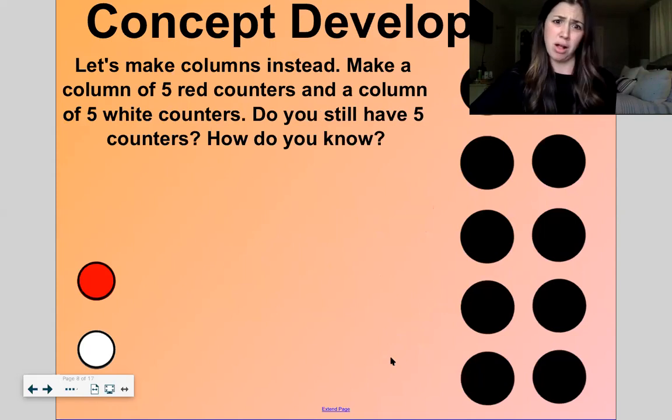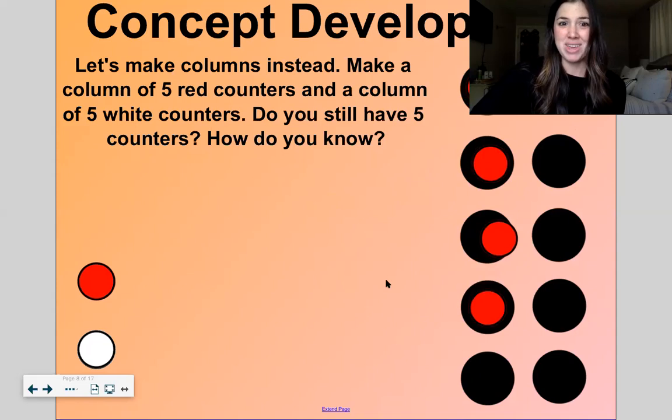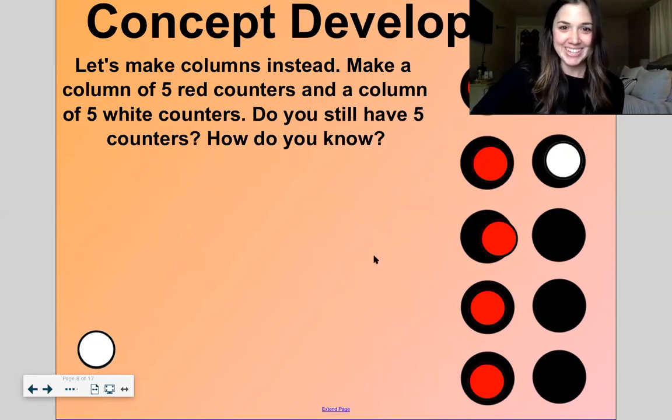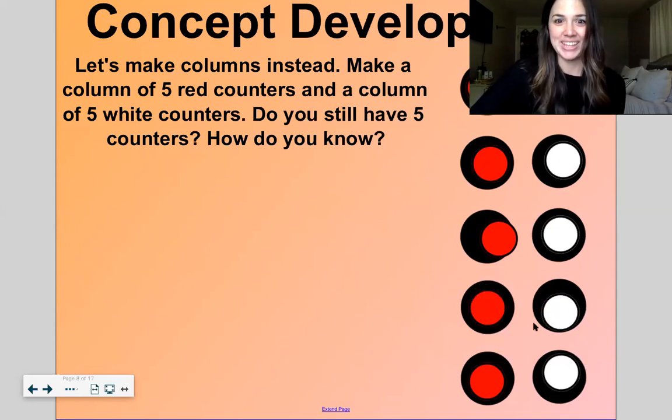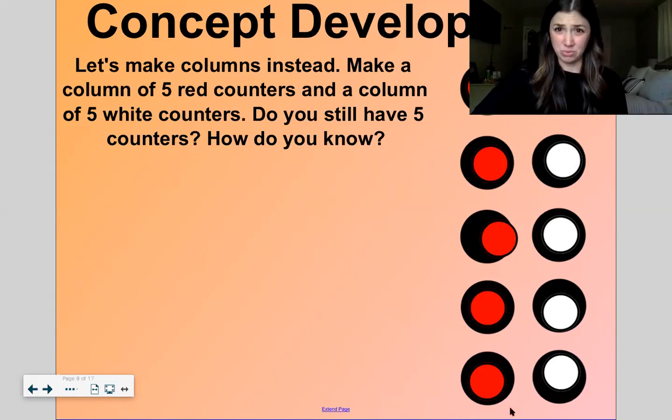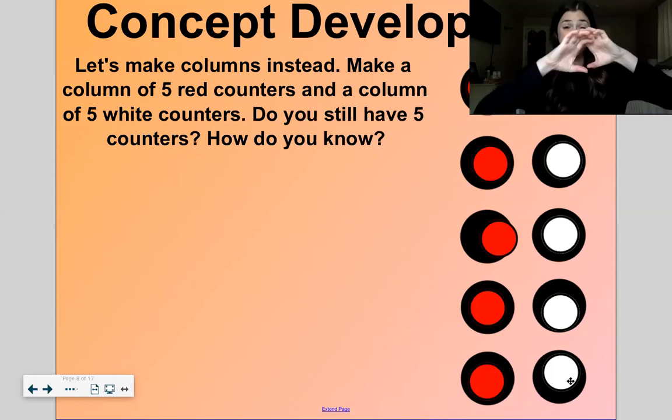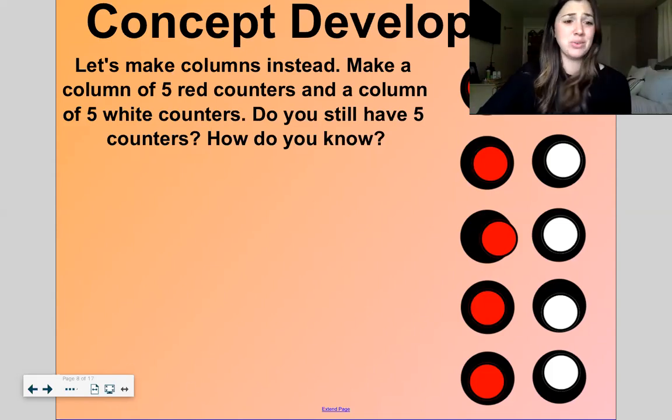Now what if we made columns instead? Let's do one column of red and then one column of white. These kind of look like silly googly eyes, don't they? They remind me of Forky's eyes from Toy Story 4. So do we still have five counters? Yeah, we have five counters in one column and five counters in the other column. We just took our mat and turned it this way. So do we still have ten altogether? Yes, we sure do.